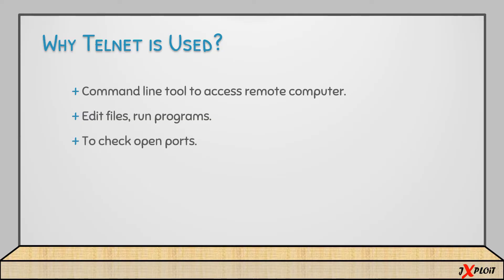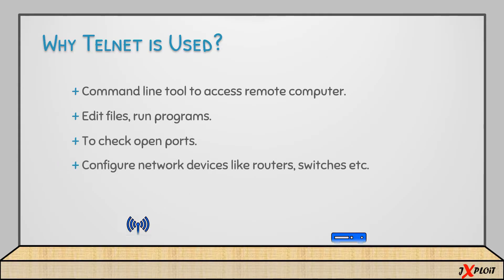Note that if you want to do all these activities, you should have enough privileges on that system. You can also use telnet to check the open ports on a remote system — just execute the command: telnet, the IP address of the remote system, and then the port you want to check. You will get a blank screen if the port is open. Last but not least, you can also use telnet to configure network devices like routers and switches. For example, you can assign an IP address to a particular port on a router using telnet.